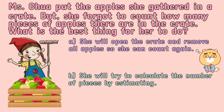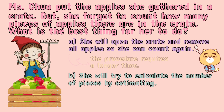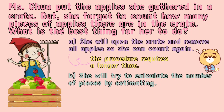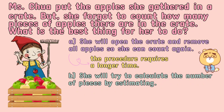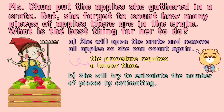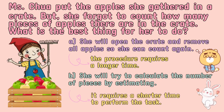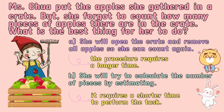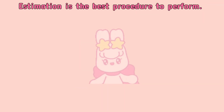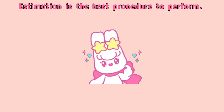Letter A is possible, but the procedure requires a longer time. Letter B is better because it requires a shorter time to perform the task. Estimation is the best procedure to perform. But how do we estimate?